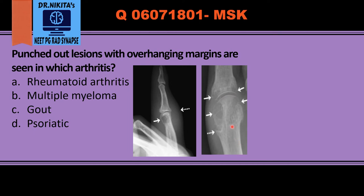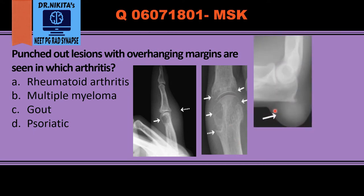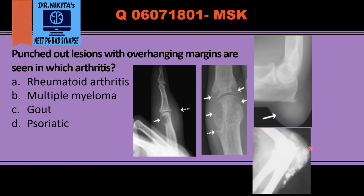This is a lateral radiograph of the elbow showing the olecranon bursa, where we see olecranon bursitis. In chronic stages we might see a calcified tophus.